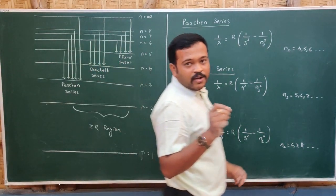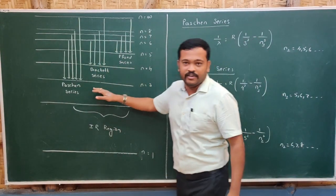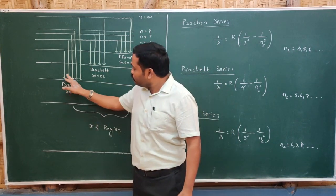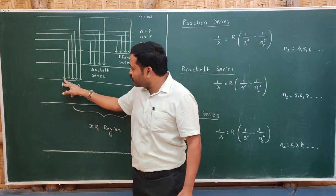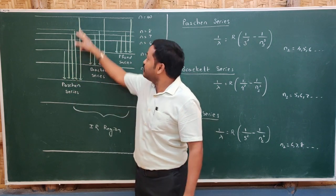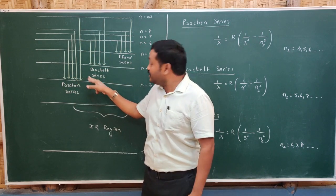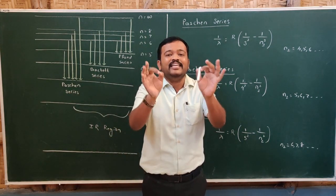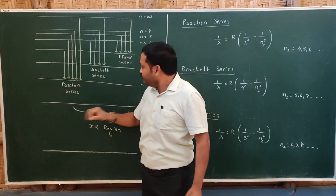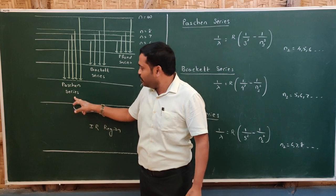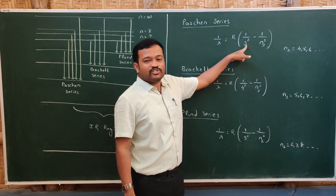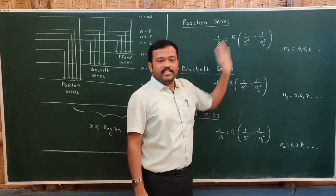Now let us move to the Paschen series. The Paschen series is obtained due to the transition of an electron from any higher energy orbit to the third energy orbit. The first, second, third, and fourth members correspond to transitions ending at n=3, with the last member being from infinity to 3 — also called the series limit. The wavelength formula is: 1/λ = R(1/3² − 1/n₂²).